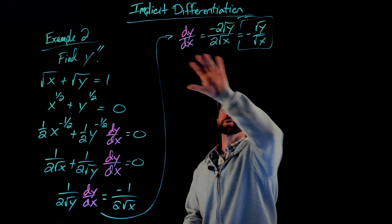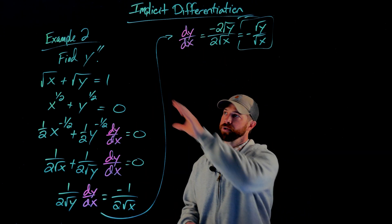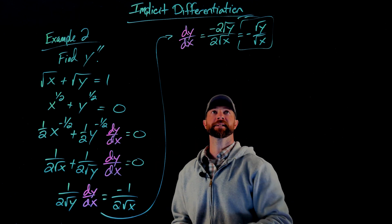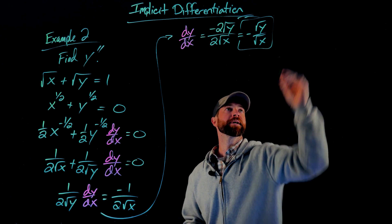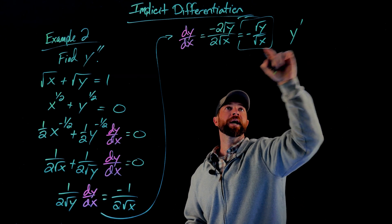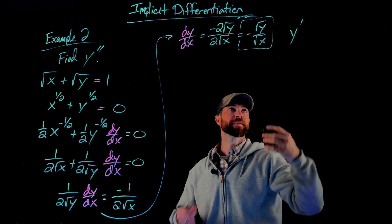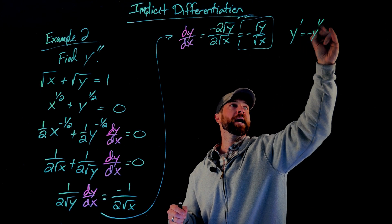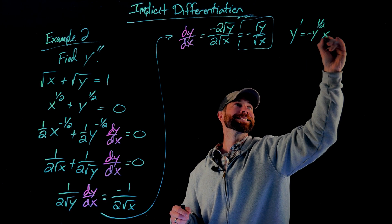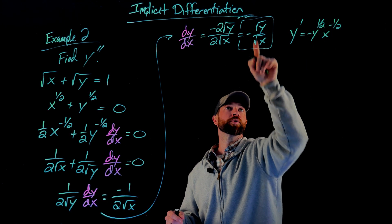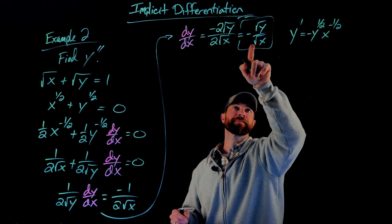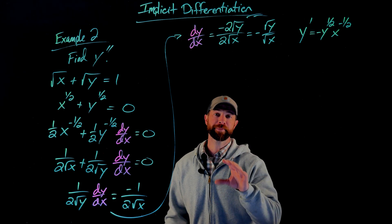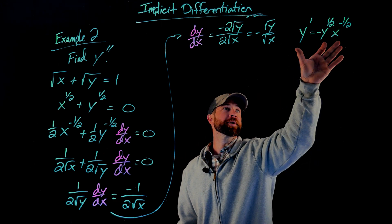Just to note: I've been using dy/dx notation, but I could also use prime notation. So the first derivative is y prime equals negative √y over √x. More usefully, for when I differentiate again, I'll rewrite this as negative y to the 1/2 times x to the negative 1/2 — just rewriting those square roots using rational exponents with x in the denominator.